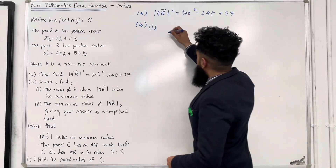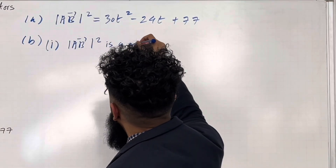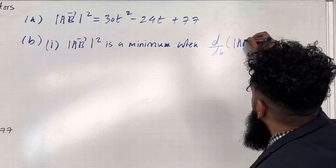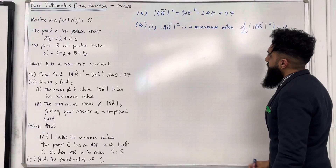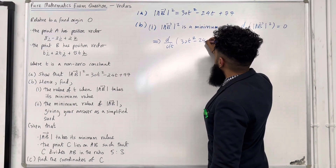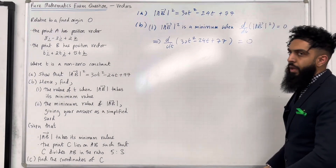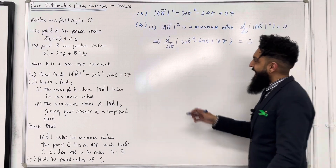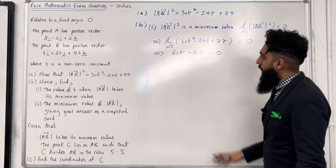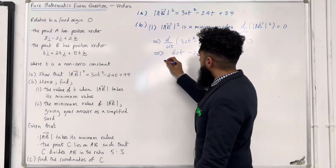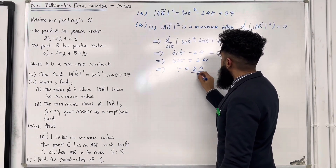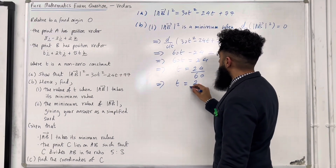Ladies and gents, we know that the magnitude of AB squared is a minimum when d/dt of the magnitude of AB squared is equal to 0. This implies that d/dt of (30t squared minus 24t plus 77) equals 0. Differentiating the quadratic with respect to t gives 60t minus 24 equals 0. Rearranging: 60t equals 24, so t equals 24 over 60.